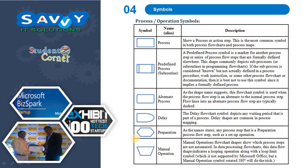The process operation symbols: the rectangle symbol indicates processing; this is for predefined process; this is for alternative process; this is for delay; this is for preparation; and this is for manual operation.